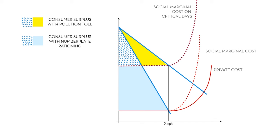Then, of course, we have the proceeds from the pollution toll if we choose the optimal solution, which will be the light blue and the brownish areas. And if we compare the two ways of limiting the traffic, we see that the welfare loss compared to the optimal solution with number plate rationing is equal to the yellow and the light brownish areas.